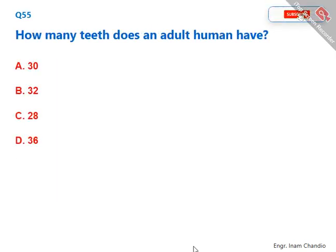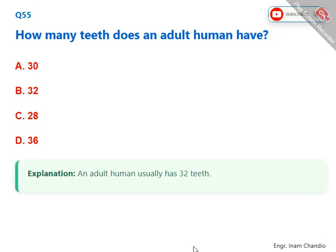How many teeth does an adult human have? An adult human usually has 32 teeth. The correct answer is B. 32.